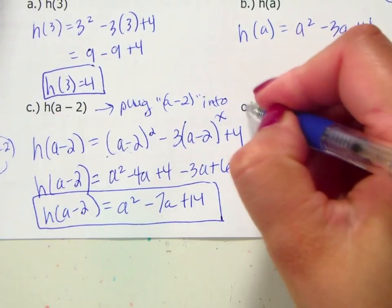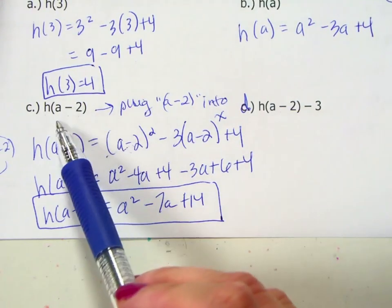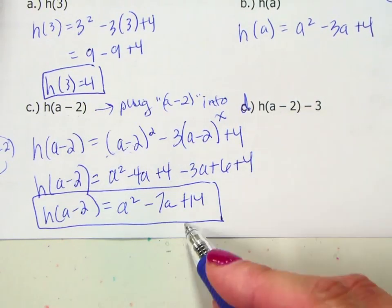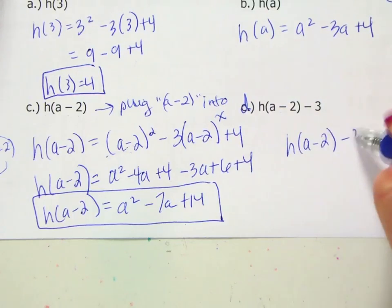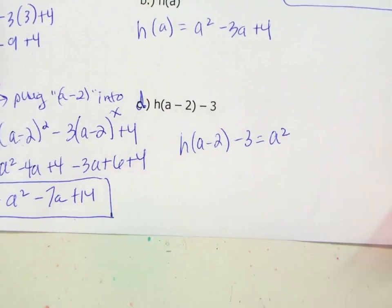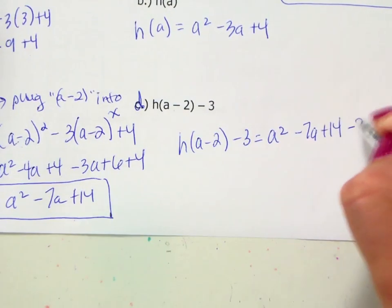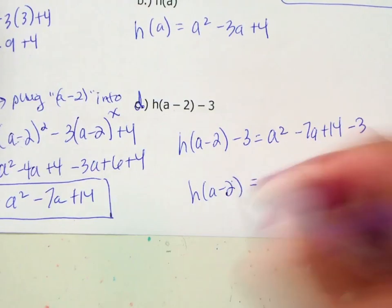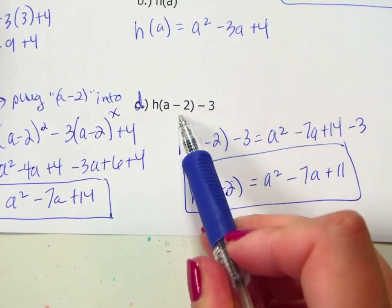If you look at what should be d, all you are doing from this example from the first one is you are taking what you got for h(a minus 2), which is here, which is here, and subtracting 3 from it. So h(a minus 2) minus 3 is taking that a squared minus 7a plus 14 and subtracting 3 off the end. So it is really important that you understand the notation.